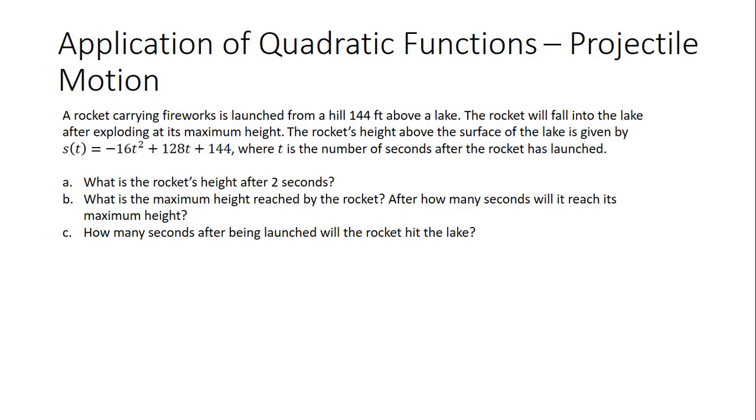This video will cover an application of quadratic functions related to projectile motion. A rocket carrying fireworks is launched from a hill 144 feet above a lake. The rocket will fall into the lake after exploding at its maximum height. The rocket's height above the surface of the lake is given by s(t), which equals negative 16t squared, plus 128t, plus 144, where t is the number of seconds after the rocket has launched. Part A is to find the rocket's height after 2 seconds.